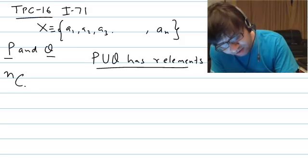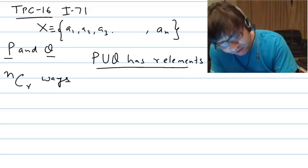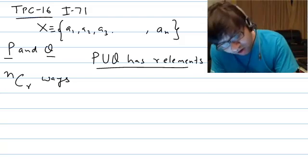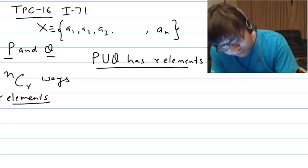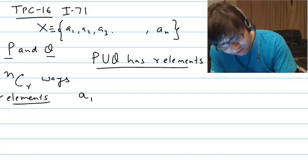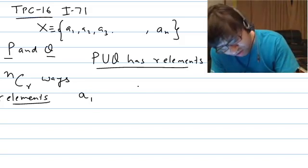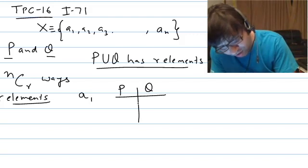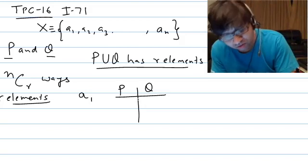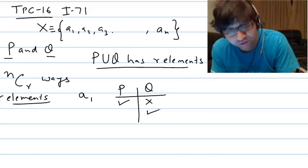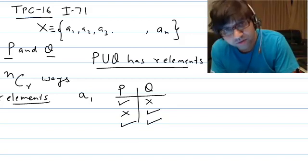First, we select r elements in nCr ways — these r elements will be present in P∪Q. Now for these r elements, consider any element A1. For A1 to be part of P∪Q, there are three favorable options: A1 can go to P but not Q, it can go to Q but not P, or it can go in both P and Q. These are the three favorable options for A1 to be included in P∪Q.